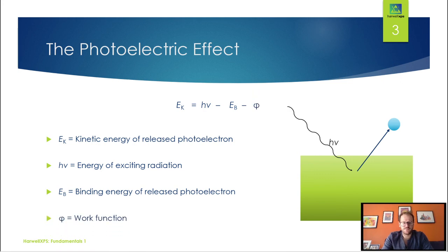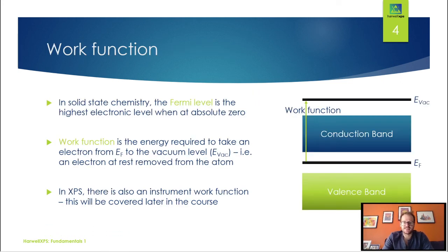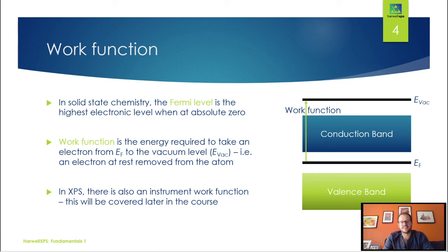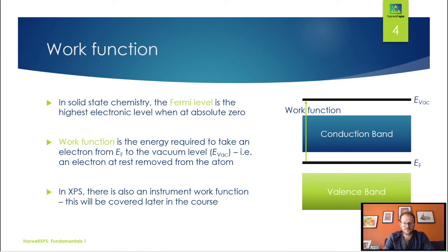We do have one final term called the work function, which explains one final little energy penalty. When we're talking about solid state materials, we need to define a couple of energy levels. One is the Fermi level — the highest electronic level when the system is at absolute zero. There's also the vacuum level, EVAC, which is when the electron is at rest and removed from the influence of the atom. The small energy penalty to remove the electron from the Fermi energy up to the vacuum level is called the work function. There is also an instrument work function, which will be covered later when we discuss instrumentation.